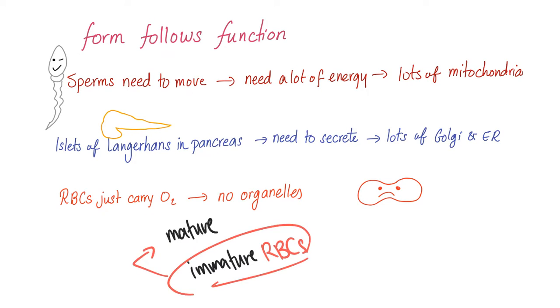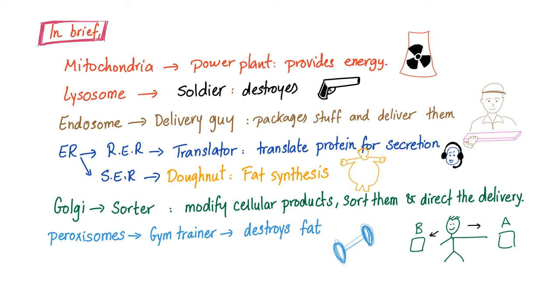Here's a summary of the organelles and their function. The mitochondria are the power plants - they provide energy. Lysosome is the soldier - it destroys stuff. Endosome is the delivery guy - it packages stuff and delivers them. Endoplasmic reticulum can be either rough endoplasmic reticulum or smooth endoplasmic reticulum. The rough is the translator - it translates protein for secretion.